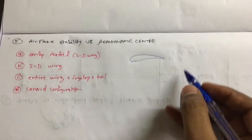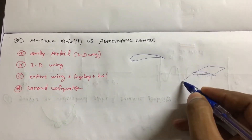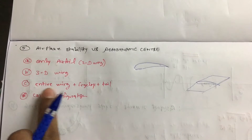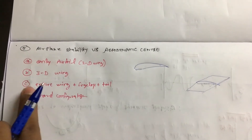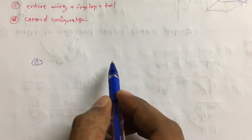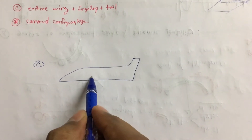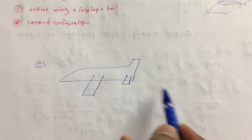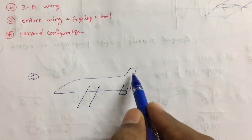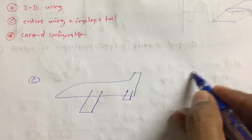Second: 3D wing. An airfoil is 2D, but when we talk about a wing, it is a 3D body. Next: entire wing plus fuselage plus tail — this is almost a complete airplane. We have the wing here, the tail here, the fuselage in between, the vertical tail, and the horizontal tail. Fourth: the canard configuration, where the tail comes in front of the wing.